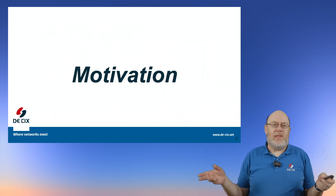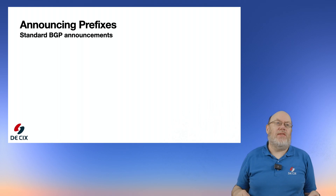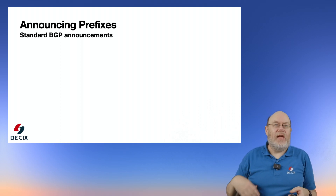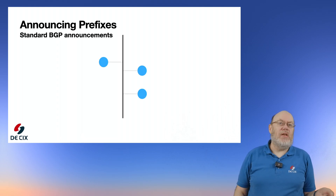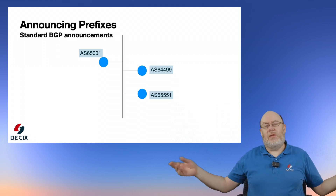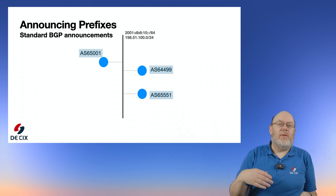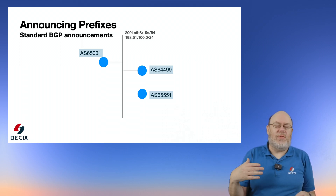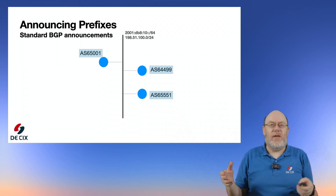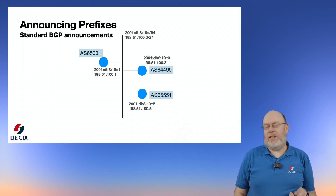What's the motivation behind that? Why do we need IP addresses on our transit network? Let's have a look at how a standard BGP announcement works. We have here our network with a couple of routers connected — like a standard peering network at DKICS. Usually these peering networks have both IPv4 and IPv6 prefixes configured, and each router has an IPv4 address and an IPv6 address.